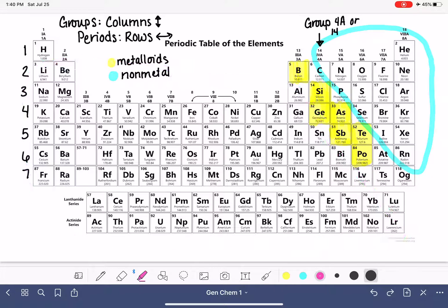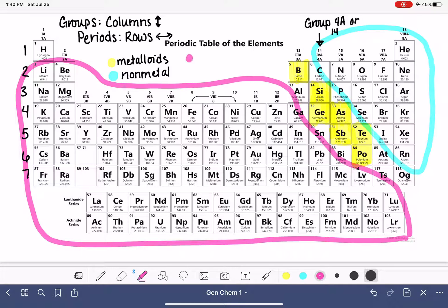And then to the left side of the periodic table, we have all of our metals. Actually, I'm going to redraw that so it doesn't go through my words. Here are the metals. And our metals are substances that are good conductors.